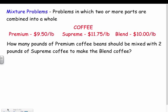Our first type of weighted average problem is mixture problems. We want to set up a table. A mixture problem is where we combine two or more parts to make a whole. For example, we have premium coffee and supreme coffee that we're going to mix together to make a blend — the premium is cheaper, the supreme is more expensive, and we want something affordable that tastes good.